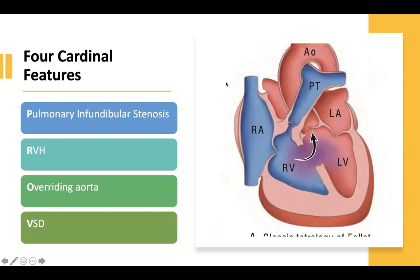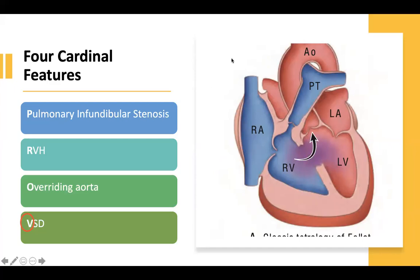Now let me give you some testmanship tips. This is what the examiner would most likely switch: instead of VSD, they're going to make it ASD. What is more common in children — VSD or ASD? The most common is still VSD. So in Tetralogy, you'd expect VSD.